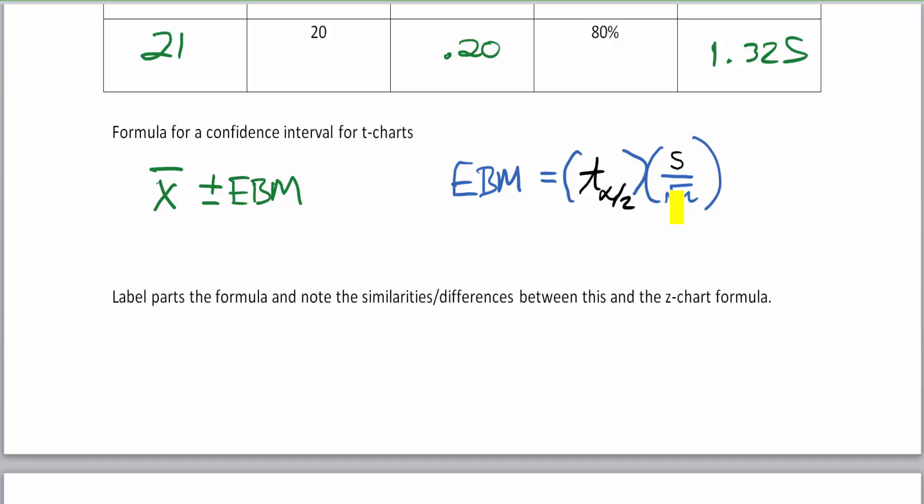Now if this looks mostly familiar, well it should, because you just did confidence intervals on z-charts. It says label parts of the formula and note the similarities and differences between this and the z-chart formula. You'll notice that everything I wrote in black is slightly different from the z-chart formula. First of all, the most notable is it was the z alpha divided by 2, but here we're using the t alpha divided by 2.